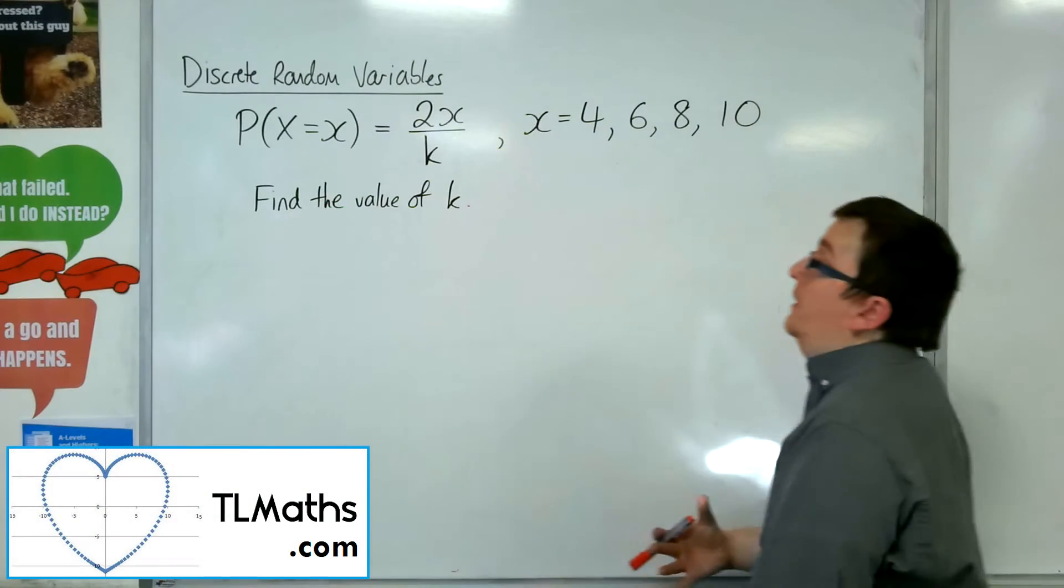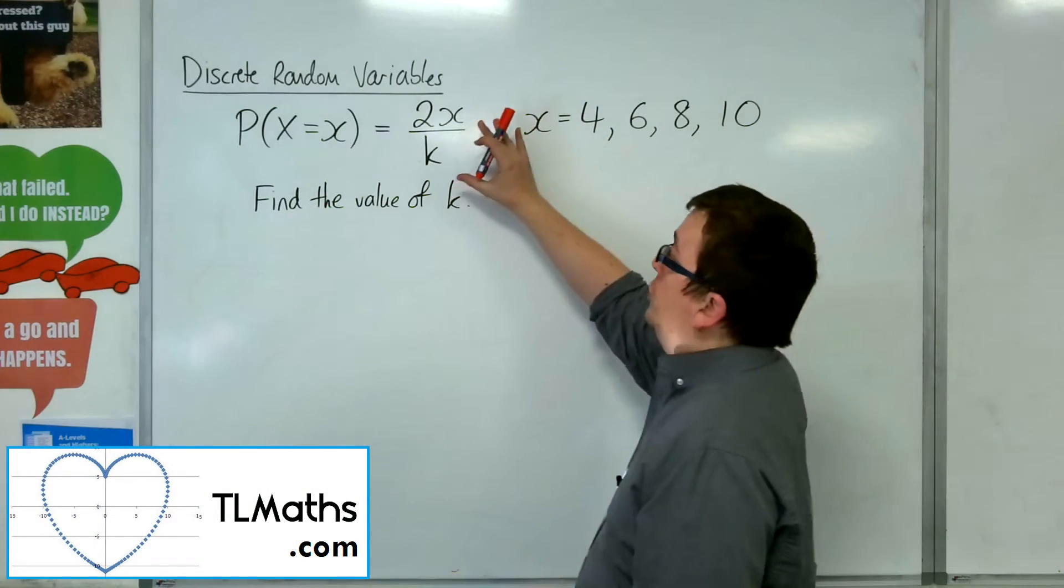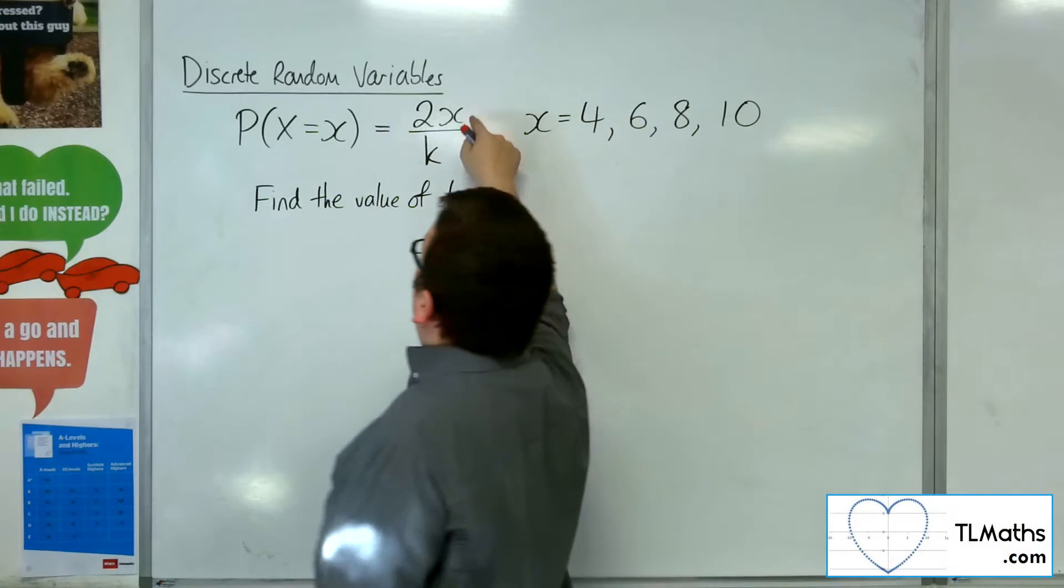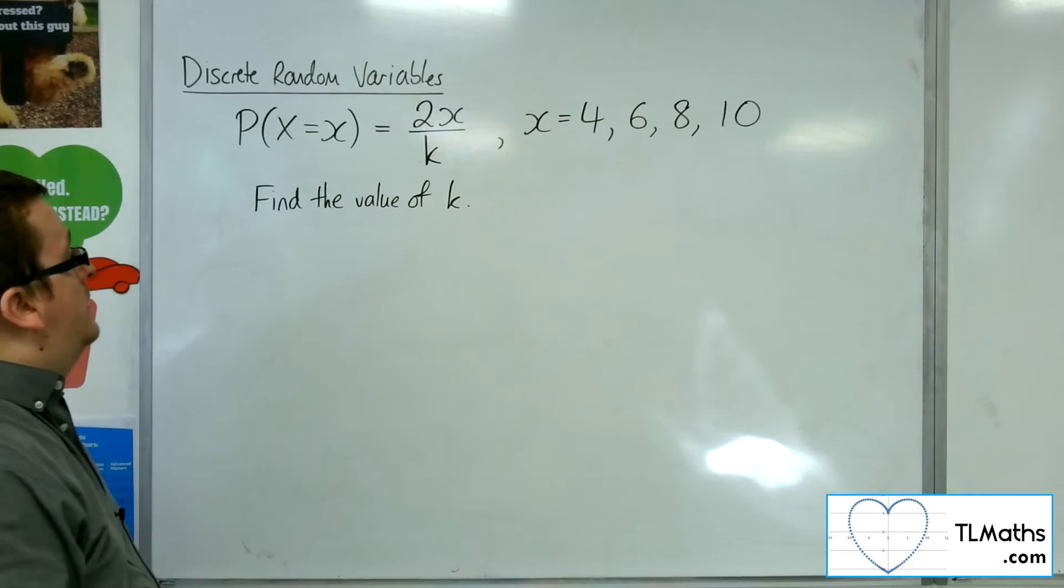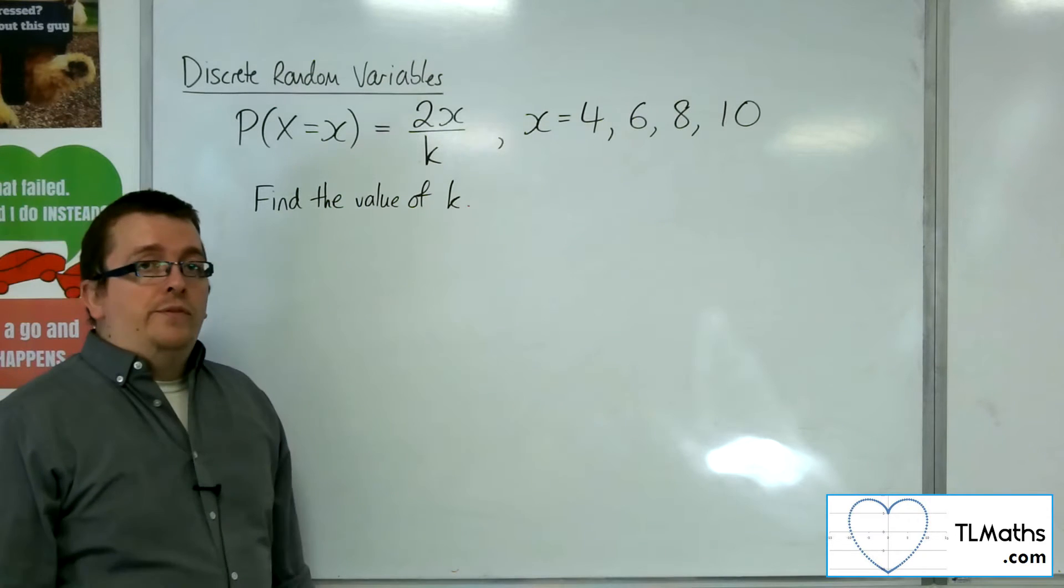OK, so we've got a discrete probability distribution given as a function. We've got this 2x over k, where I'm told that x can take on the values 4, 6, 8 and 10. And we're asked to find the value of k.